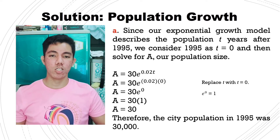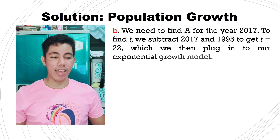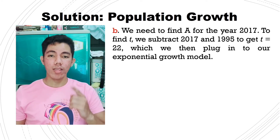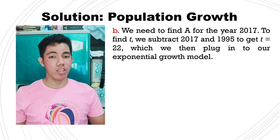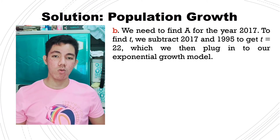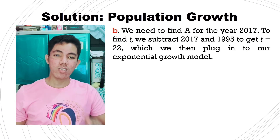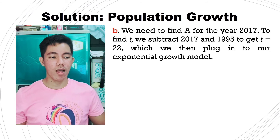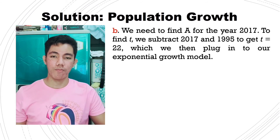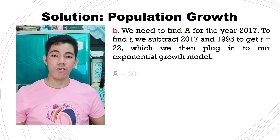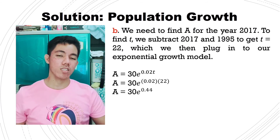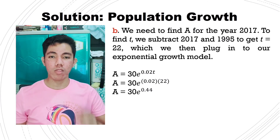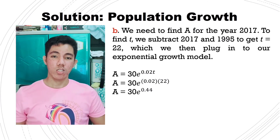Now let's proceed to the next question. We need to find A for the year 2017. To find t, we subtract 2017 minus 1995, which is equivalent to 22. So t equals 22, which we then plug into our exponential growth model. A equals to 30 times e raised to 0.02 times t. Substituting t equals 22, that gives us 0.02 times 22, which is equivalent to 0.44.